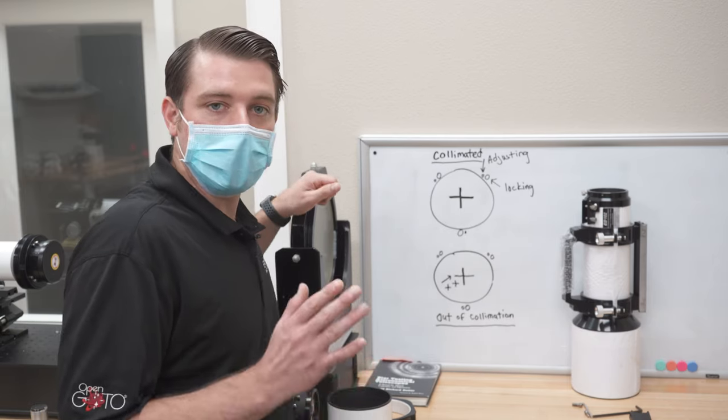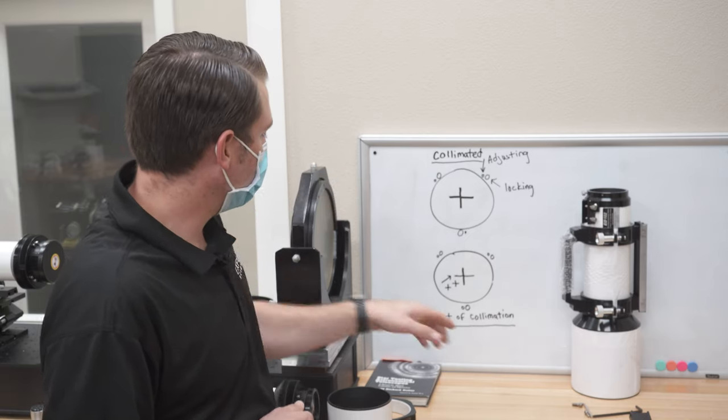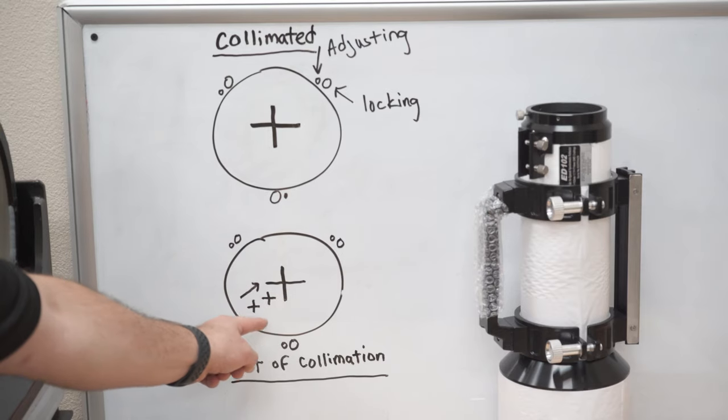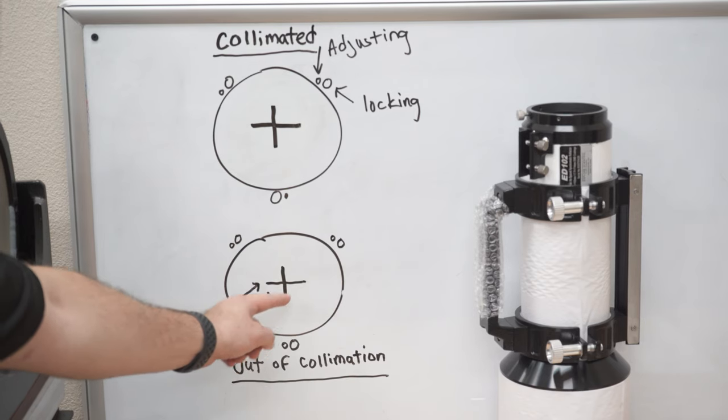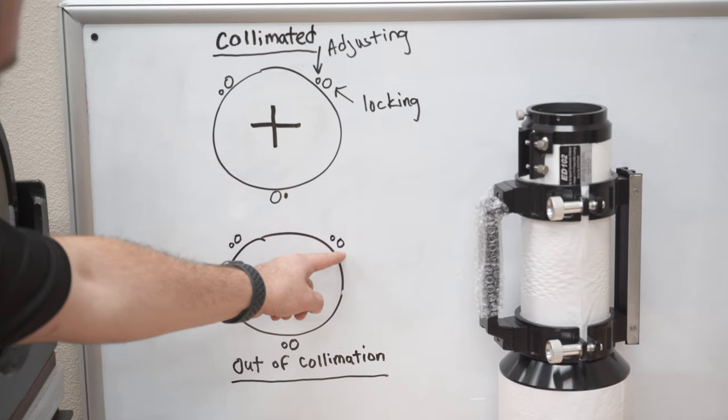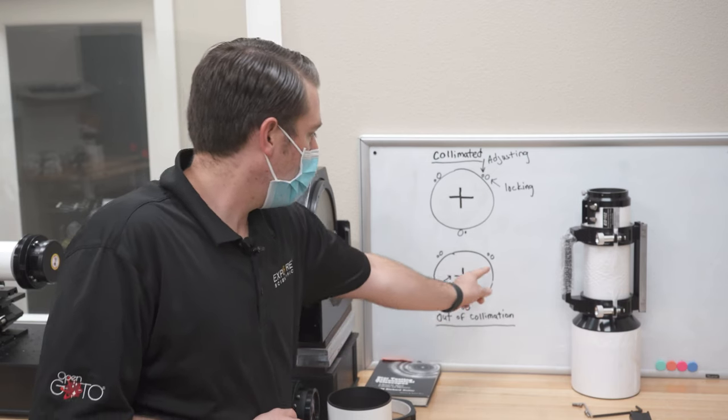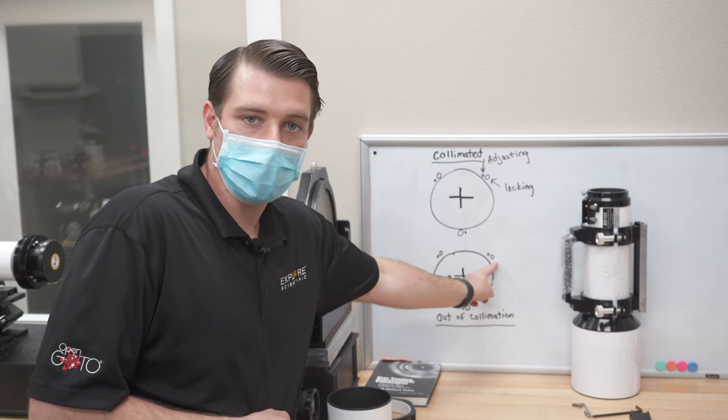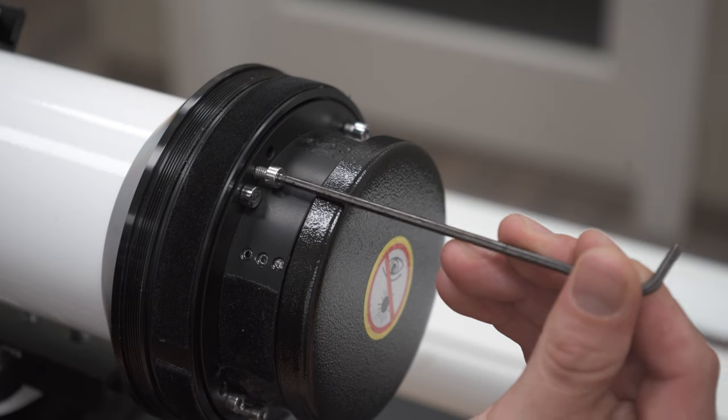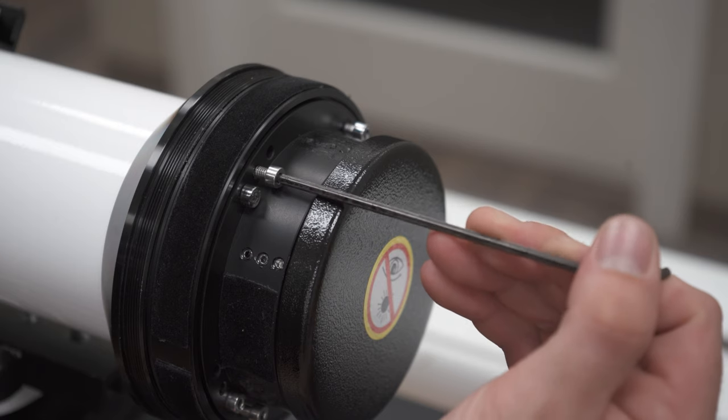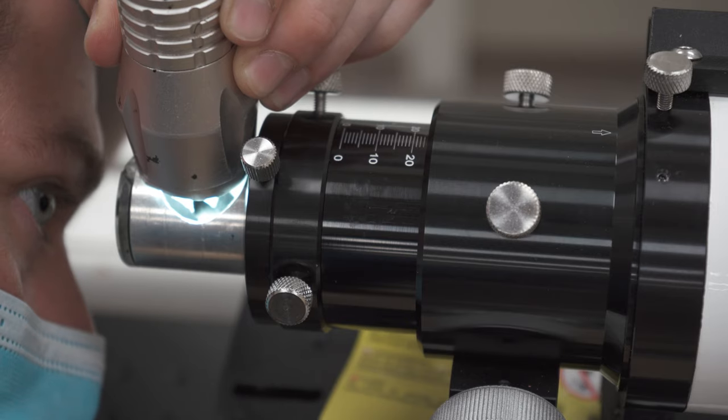Now after you've loosened your locking screws slightly, you are then going to evaluate the position of the out of place crosshairs. You are then going to find the adjustment point that is opposite of those out of place crosshairs. You will then adjust your adjusting screw, snug up all the locking screws around the lens cell, go back to your Cheshire eyepiece and evaluate your collimation.